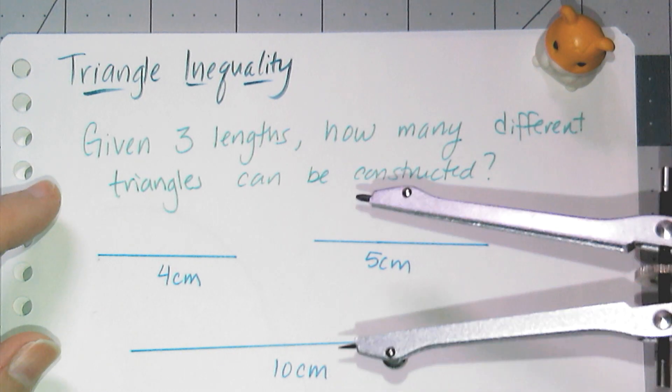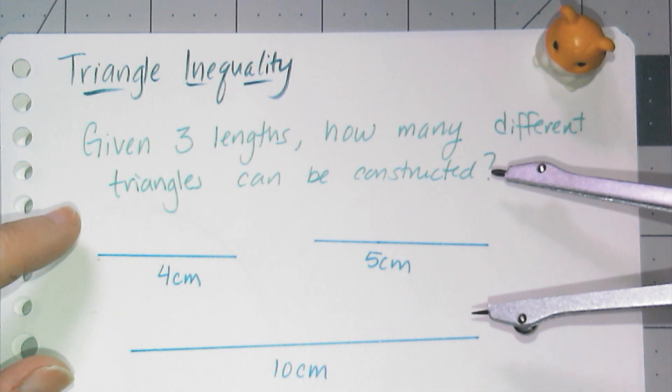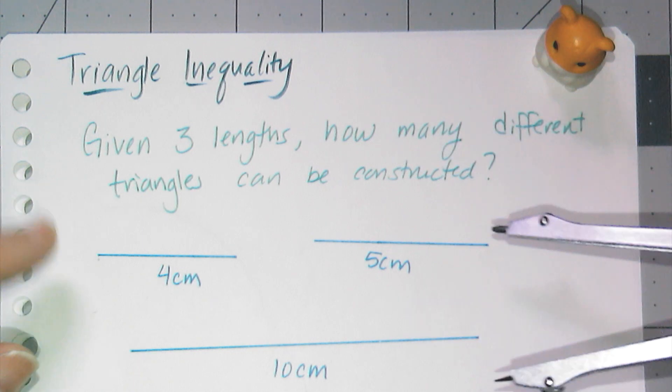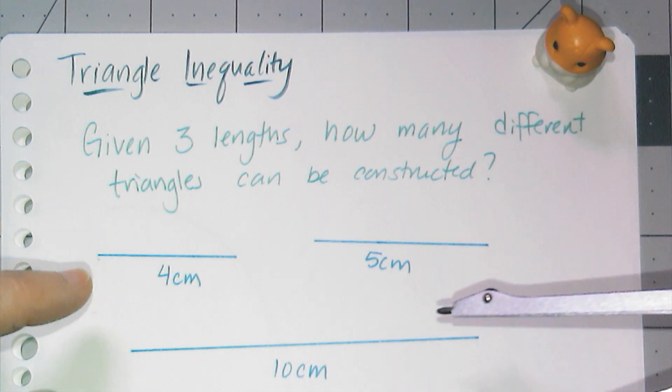So we're going to start by constructing a triangle. I've been given these three links that are supposed to be the sides of a triangle and I want to know how many triangles I can construct with these values as side lengths.